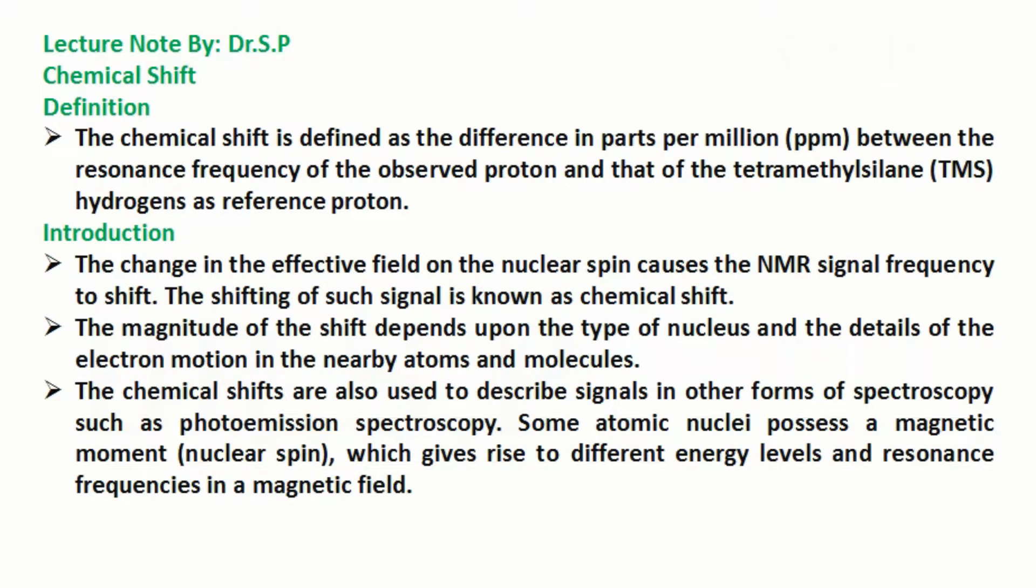In this tutorial we will discuss chemical shift and factors influencing chemical shift. Let's start with definition. The chemical shift is defined as the difference in parts per million (ppm) between the resonance frequency of the observed proton and that of the tetramethylsilane (TMS) hydrogens as reference proton.